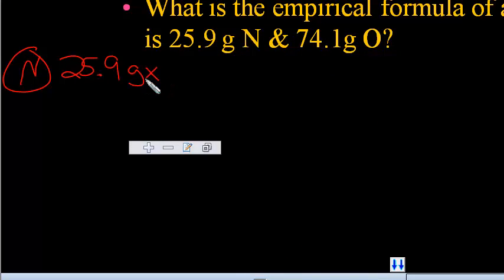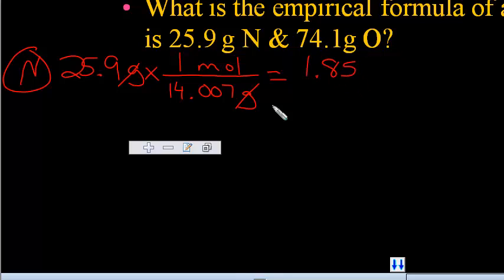So you've got grams on top, so you've got to put grams on the bottom, and it would be the molar mass of nitrogen and one mole on top, so that cancels your grams. And then you've got your answer, 1.85.